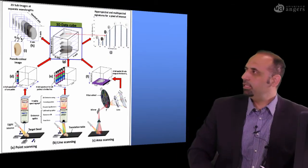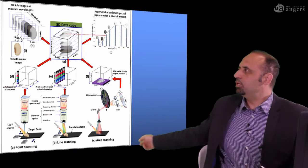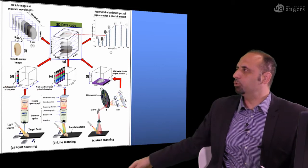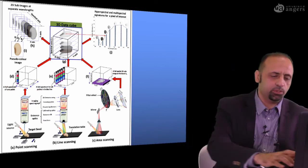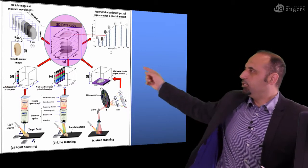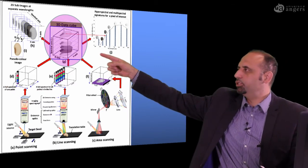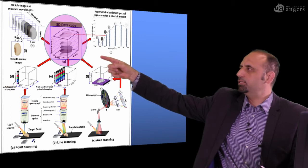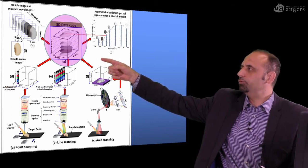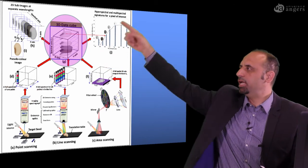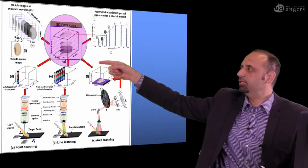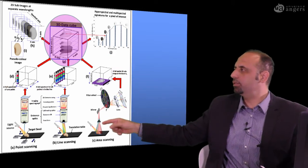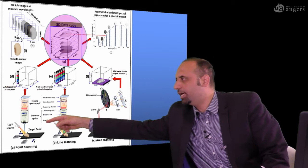This is a general view of the image acquisition and image processing protocol from start to end. The goal is to obtain a multispectral or hyperspectral image, which is a 3D image consisting of two spatial dimensions and one spectral dimension. There are three categories, or three methods, of acquiring this kind of image.